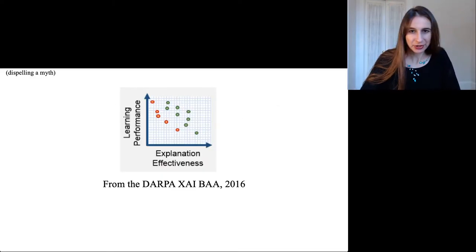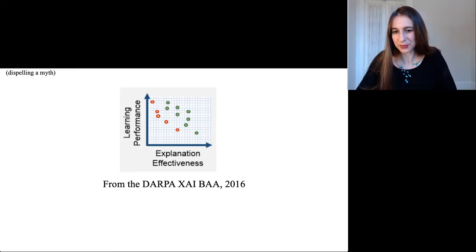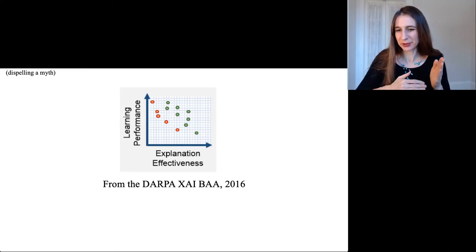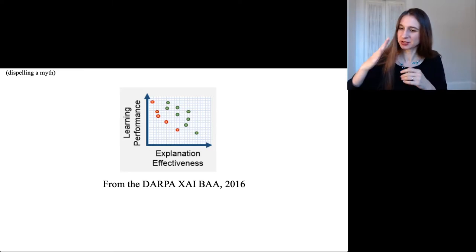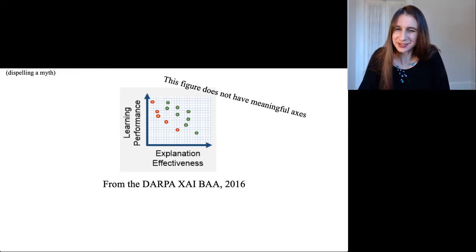Before I go any further, I want to dispel this ridiculous myth that you always need to sacrifice accuracy to gain interpretability. This image comes from the DARPA Explainable AI BAA. I looked at this picture and it doesn't make any sense. They're trying to show that you have to sacrifice learning performance to get an effective explanation, that there's some inverse relationship between the two, but this figure doesn't have meaningful axes.